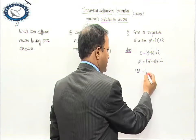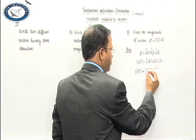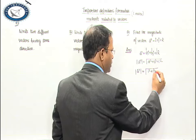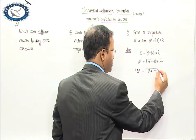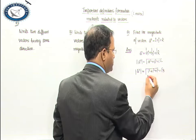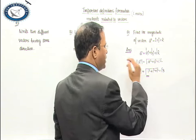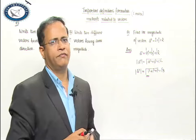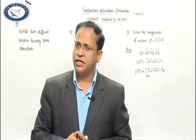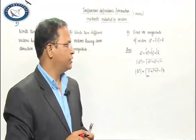That means we can write it as 1 squared plus 1 squared plus 1 squared — and this is nothing but the magnitude. We call this the magnitude.